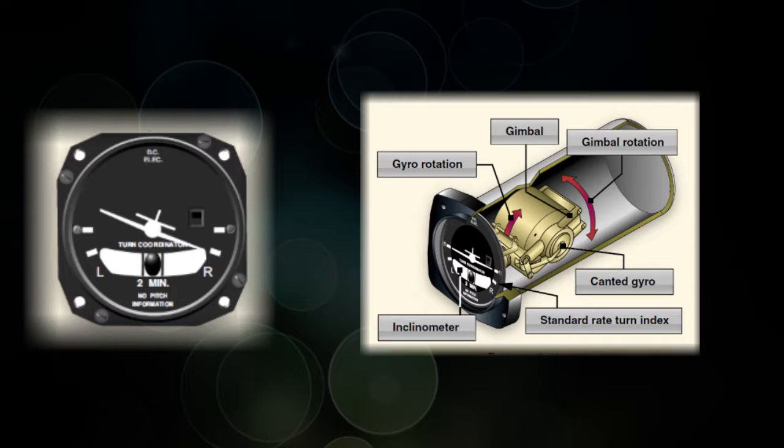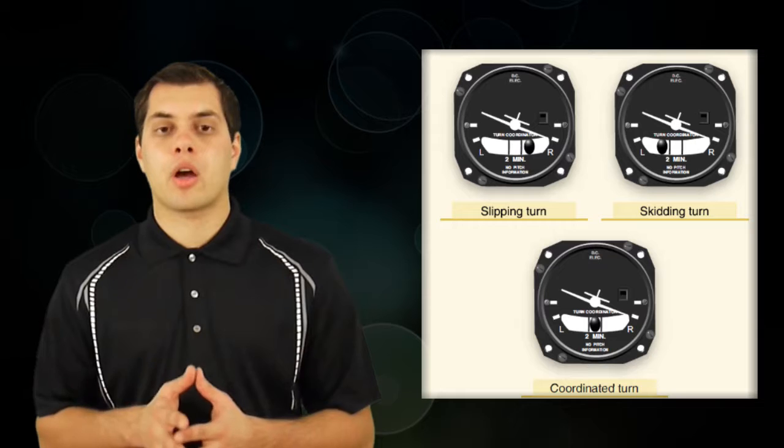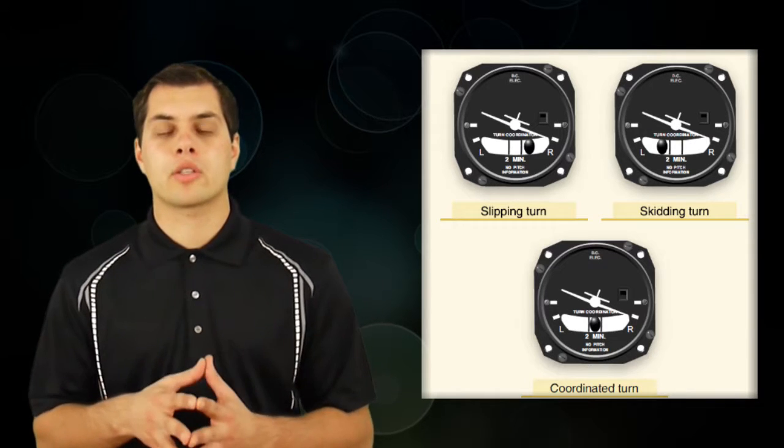Now the turn coordinator doesn't seem to have that much information on it, but it does have enough to keep you flying. We did talk about the inclinometer or the ball part of the turn coordinator, and that shows how coordinated your flight is. Now if the ball is inside or outside, we call that either skidding or slipping, depending on where it is in the turn.